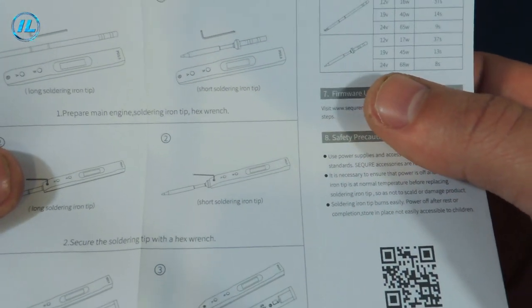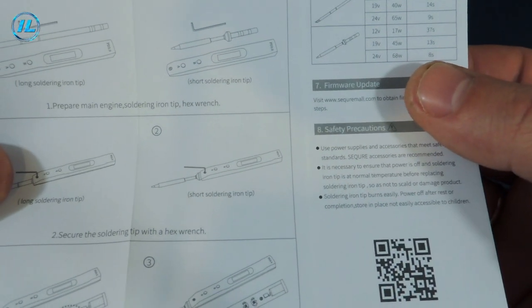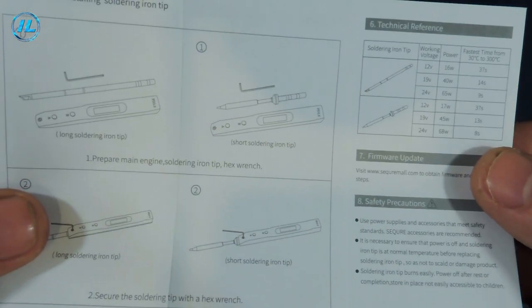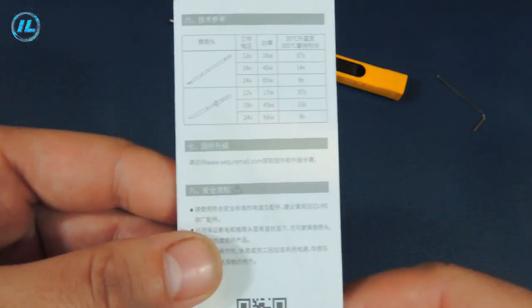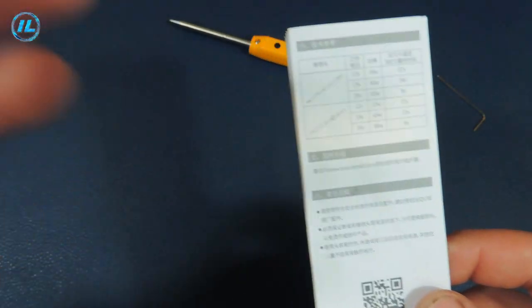At a supply voltage of 24 volts, the heating of the soldering iron is only 8 seconds. Well, this is a wonderful soldering iron with excellent characteristics and it's time to check it in operation.